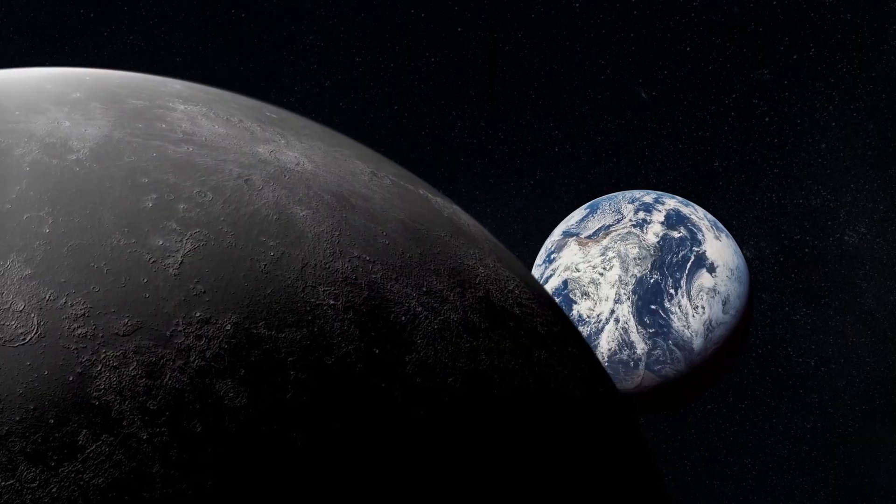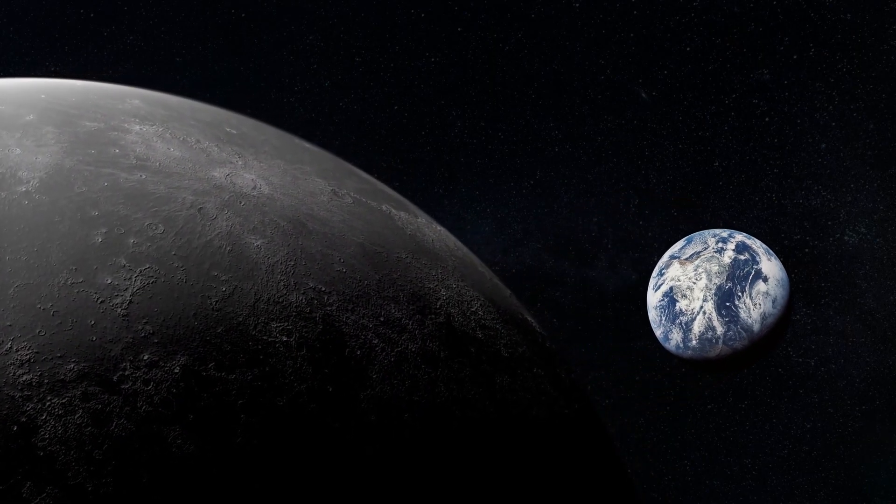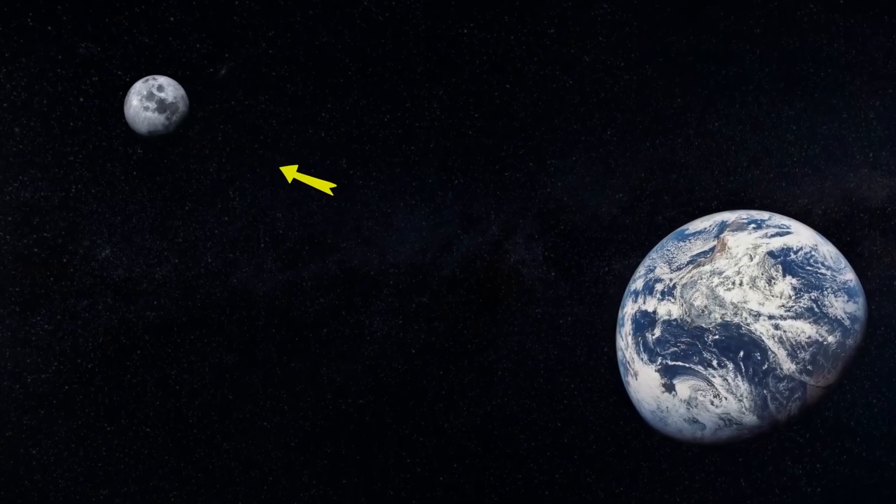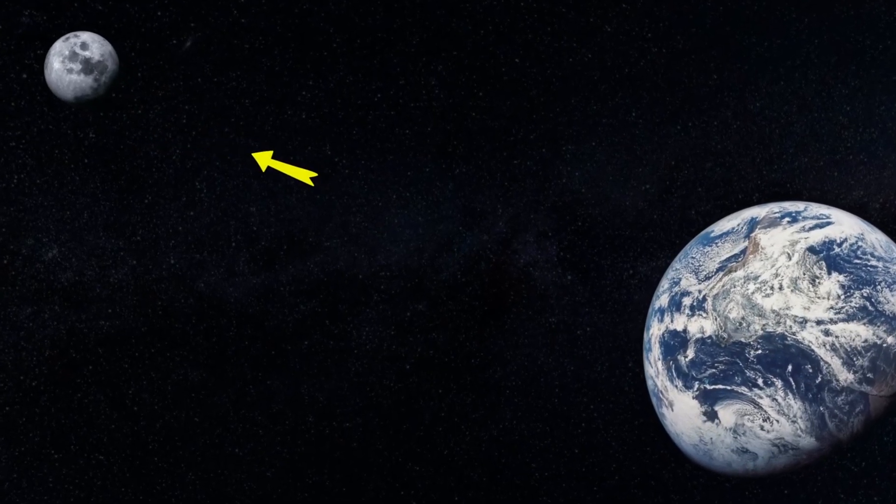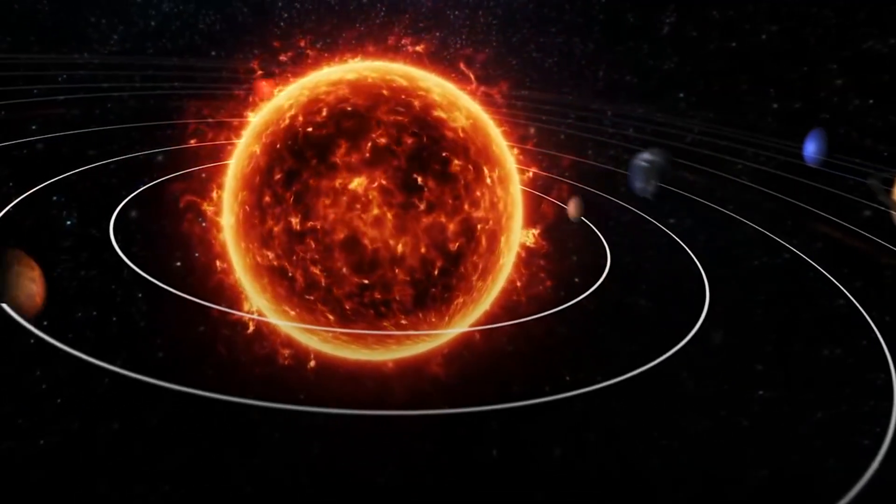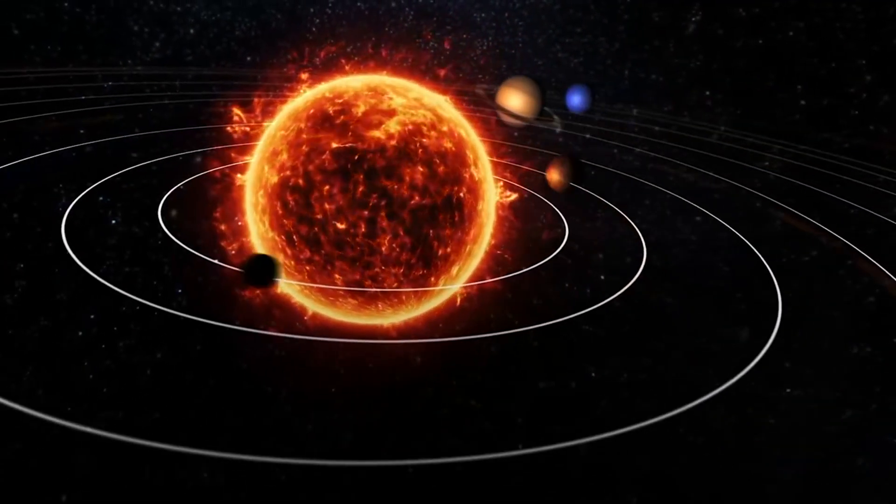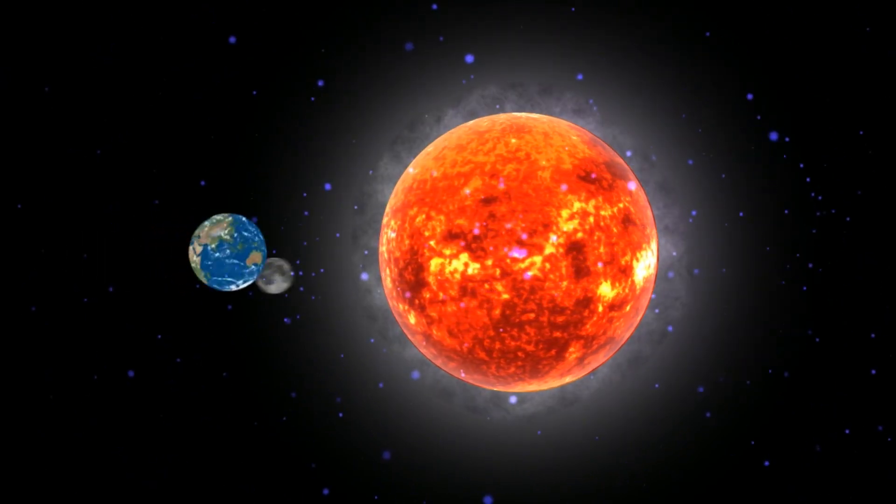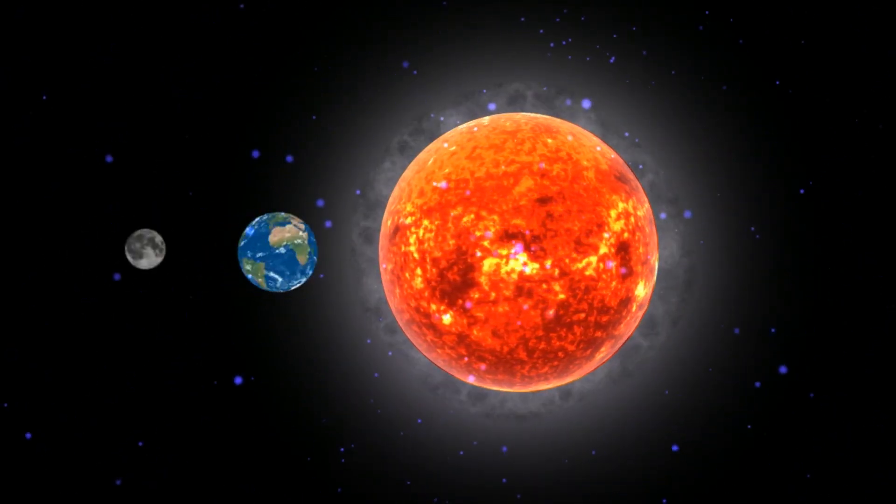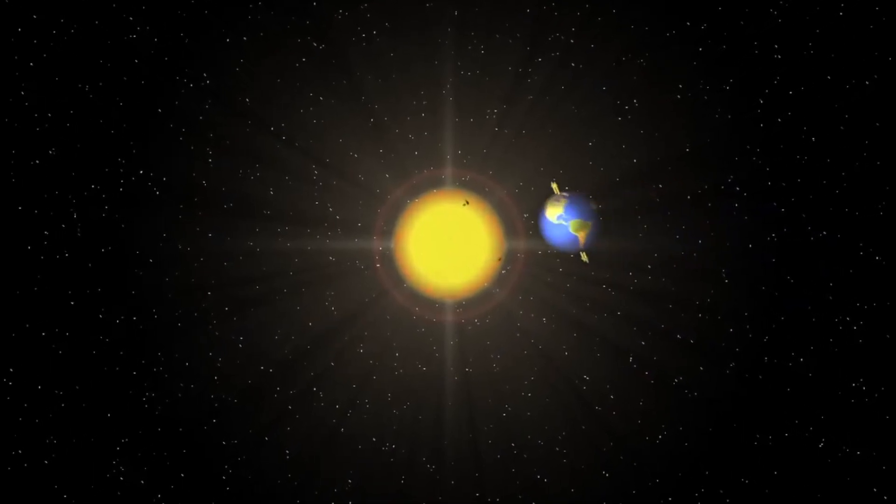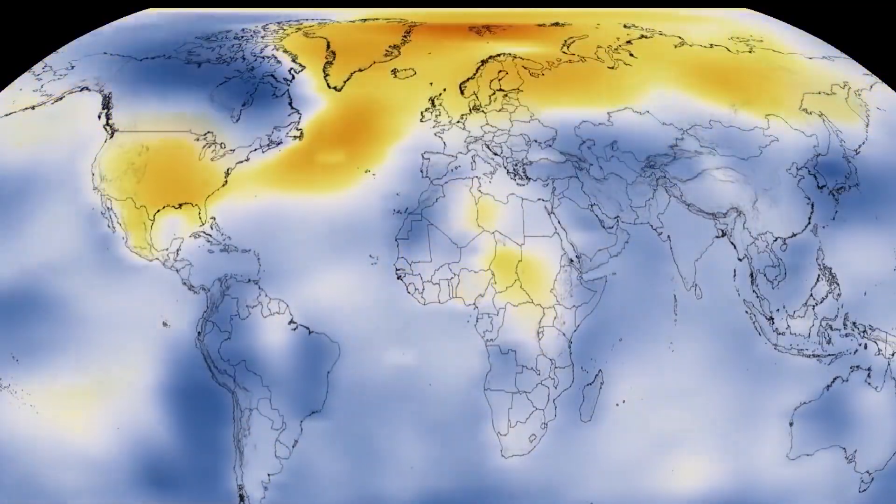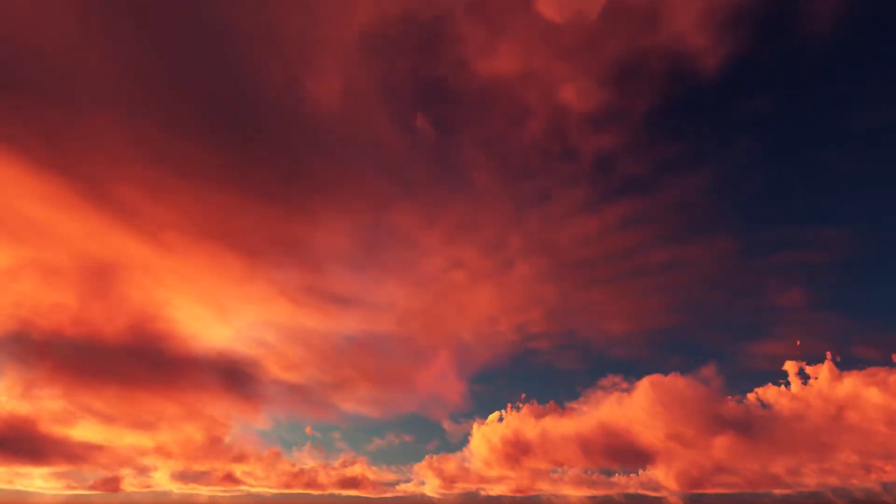The moon's gradual retreat from Earth is just one facet of scientific research. Researchers are also delving into how the moon's changing distance influences our interactions with other celestial bodies in the solar system. Notably, the moon plays a pivotal role in stabilizing Earth's orbit around the sun. As it distances itself, this stabilizing effect may be impacted, potentially leading to alterations in our planet's climate and weather patterns.